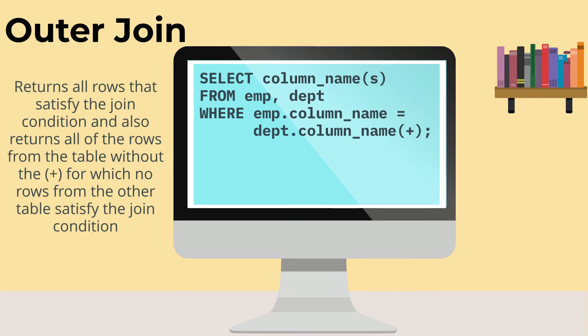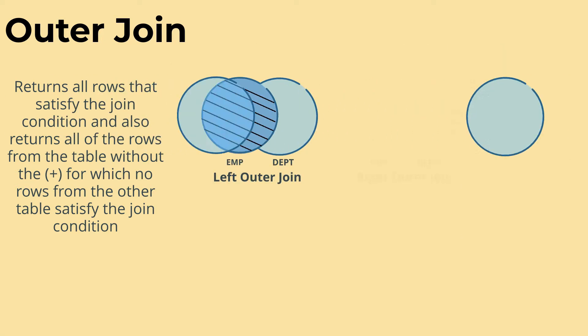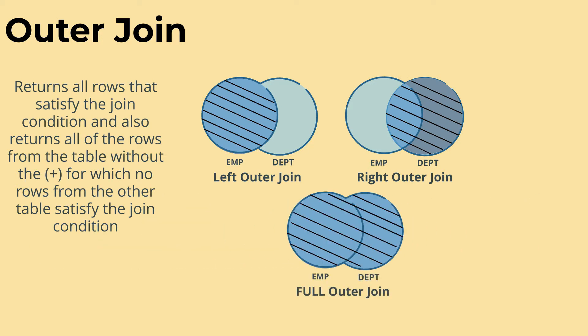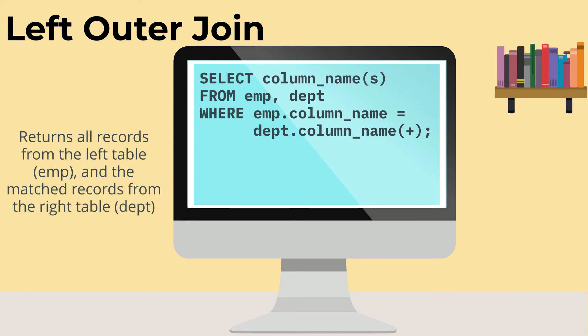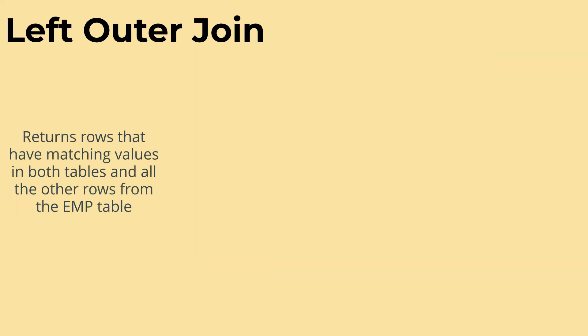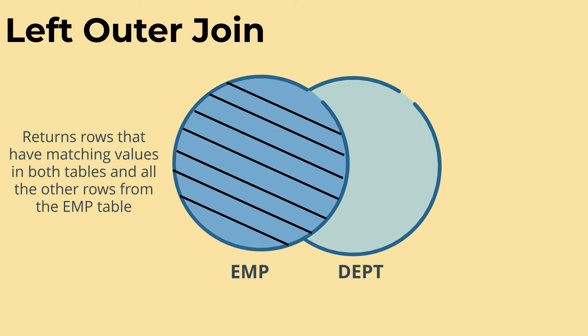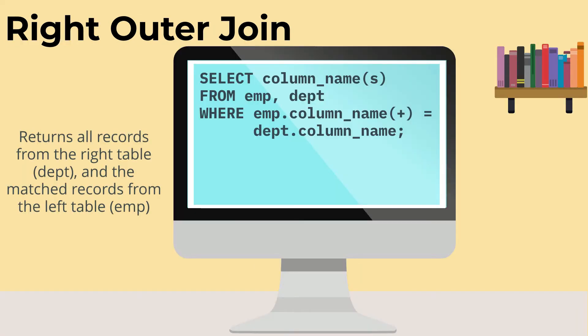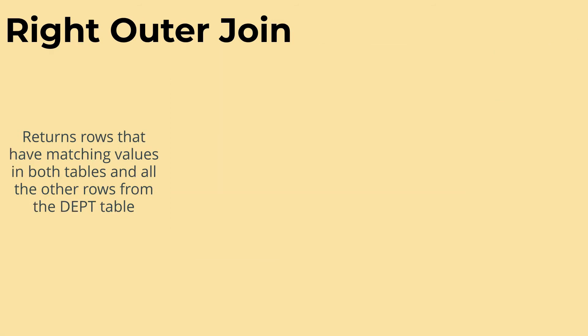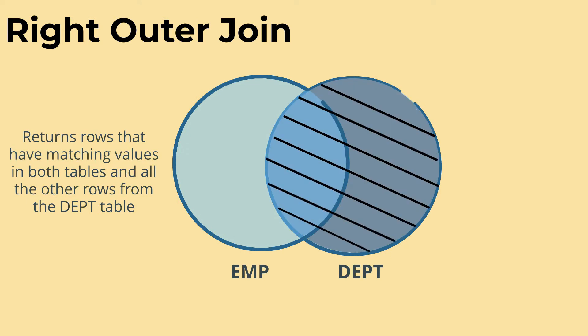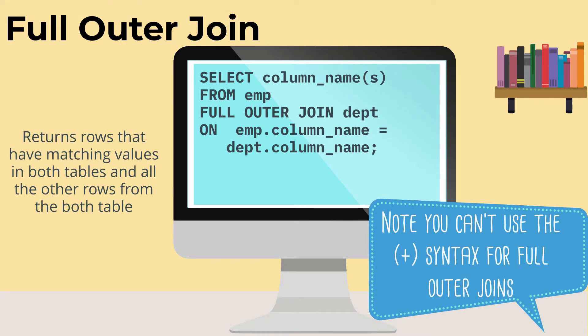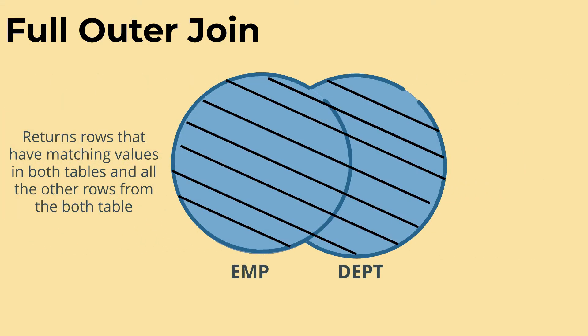You also have the option to do outer joins. With an outer join, we not only return the rows where the condition is met, we also return rows from one or the other of the tables in that join. With a left outer join, we return everything that matches plus all the other rows from the left-hand side where there isn't a match. The reverse is true for a right outer join. And a full outer join returns all rows from both tables, even if there isn't a match, as well as the matched set.